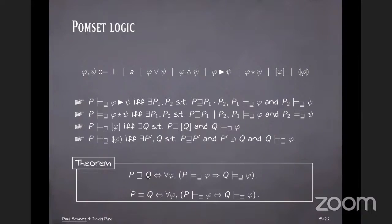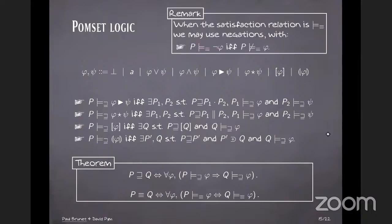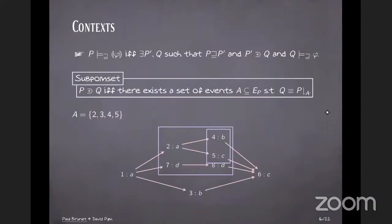Just a remark, when we choose the satisfaction relation to be parametrized by the isomorphism, we can also use negation in the formulas. But it makes less sense if the relation is something else than isomorphism. Right. So I promised I would talk about context.